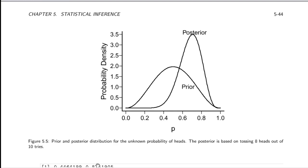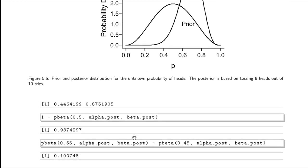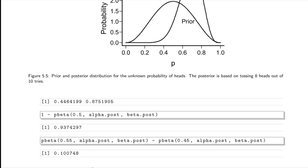We can calculate the probability that the probability of heads is greater than 0.5 — that is 0.94. We can also calculate something more intuitive: the probability that the chance of heads is within plus or minus 0.05 of fairness. Defining fairness as being within 0.05 of 0.5, we calculate the area under the posterior between 0.45 and 0.55. Our probability that the coin is within 0.05 of being exactly fair is only 0.1 — a pretty low probability that the coin is close to fair.